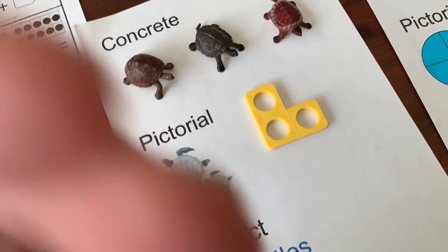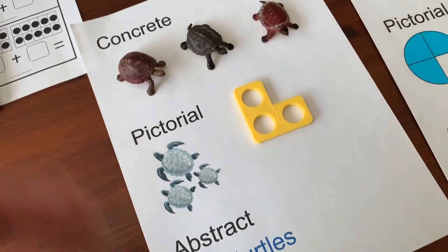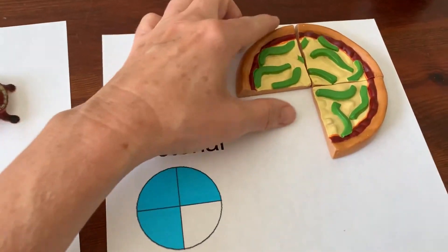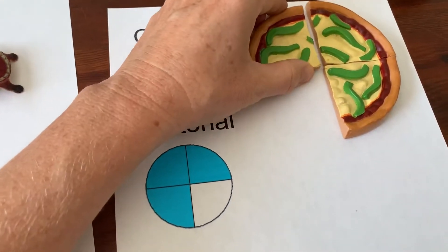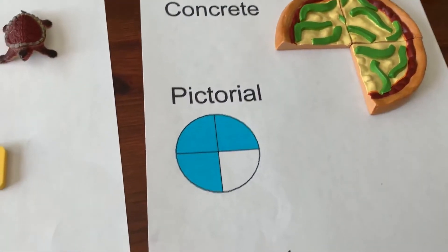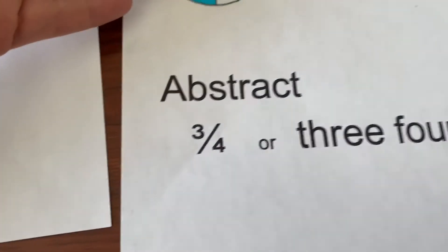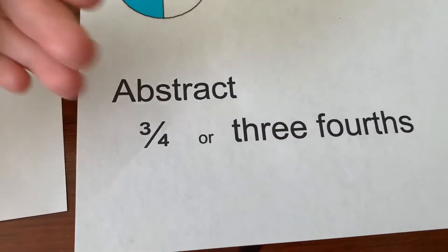Gentle steps towards the abstract, but don't push it. Don't rush it. Here's another example of concrete: when you start dealing with fractions, here's three-fourths of a pizza. Pictorial would be a picture of three-fourths, and the abstract would be just the numbers or the words 'three-fourths.'